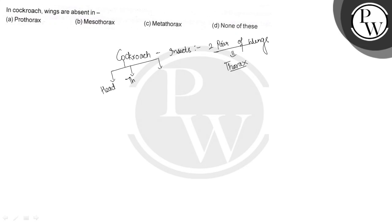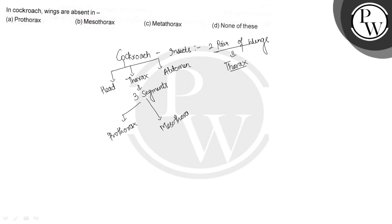The thorax is formed by three segments. The first segment is called the prothorax, the second segment is the mesothorax, and the third segment is the metathorax.